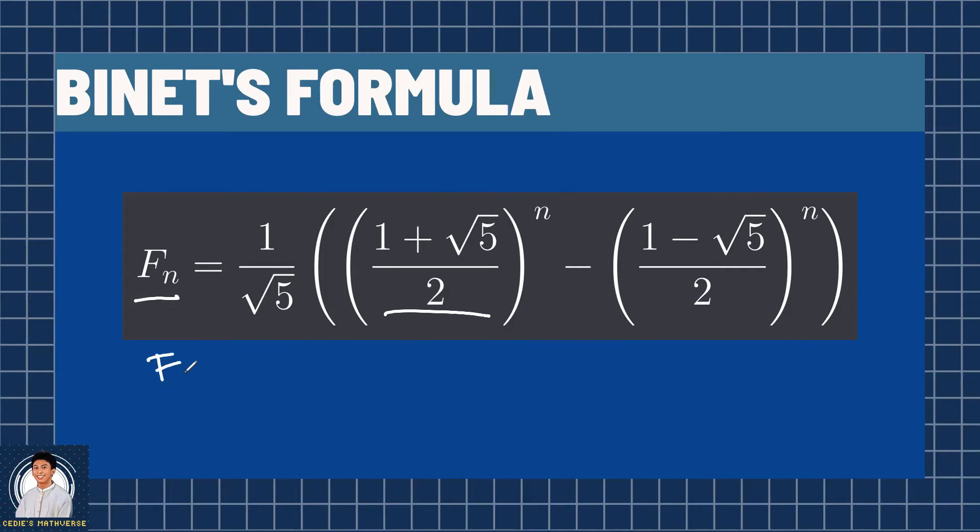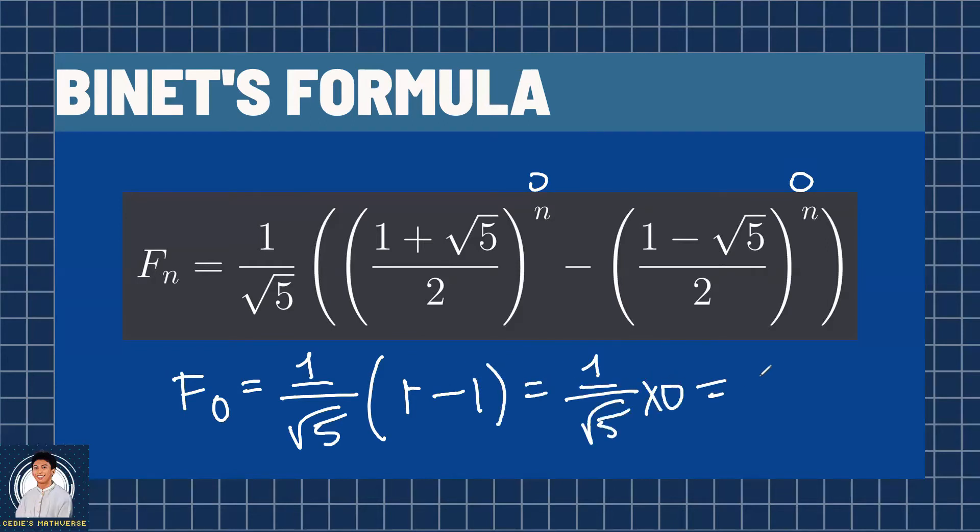F sub 0 is equal to 0, right? Since F sub 1 equals 1 and F sub 2 equals 1 rather, we can see that F sub 0 equals 0 since 0 plus 1 equals 1. We can check for the first few values to see if this works. So F sub 0 equals 1 over square root of 5. Any number raised to 0 that is not 0 is 1. So 1 minus 1, which is 1 over square root of 5 times 0, 0 indeed.